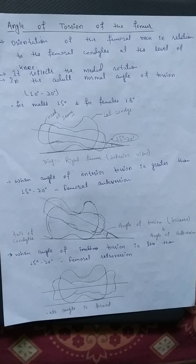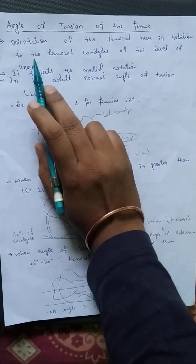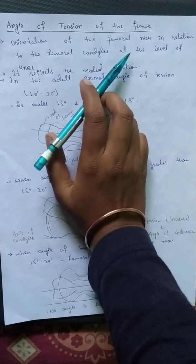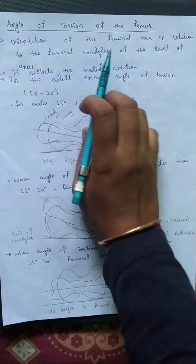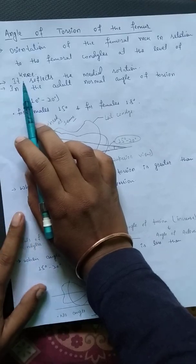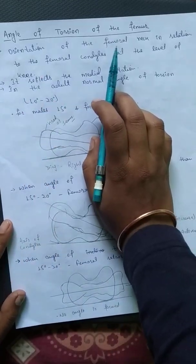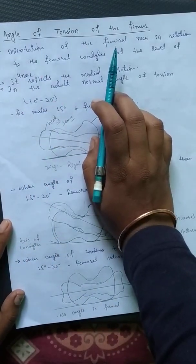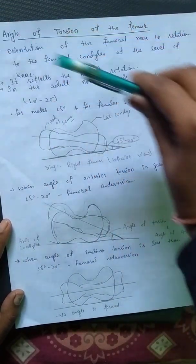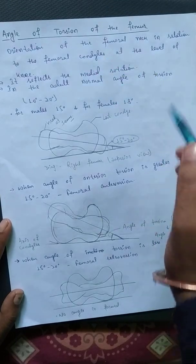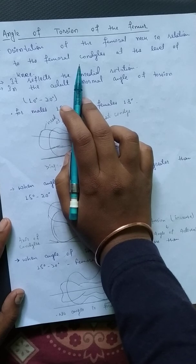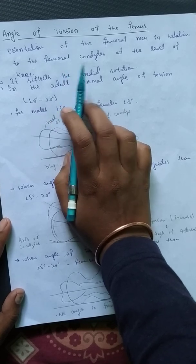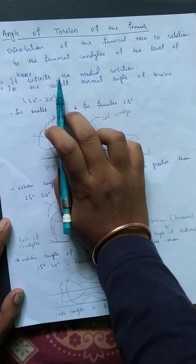So what is the angle of torsion? The angle of torsion is the orientation of the femoral neck in relation to the femoral condyles at the level of the knee. The femur has a straight line from its axis, and the condyles — which are the distal femur — present the femoral condyles, both lateral as well as medial condyles.